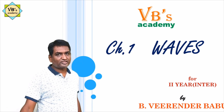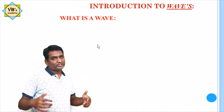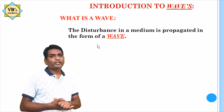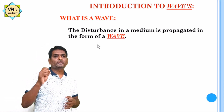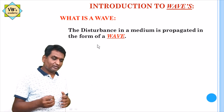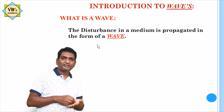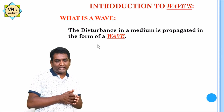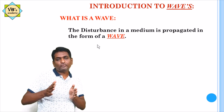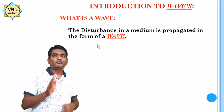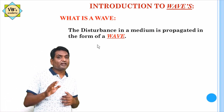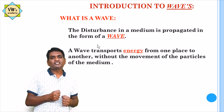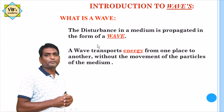Today we are going to start the first chapter, that is Waves. So what is a wave? Any disturbance causing a medium is propagated in the form of a wave. For example, in still water, if you throw a stone, you will observe the ripples. When the stone strikes the water surface, it supplies kinetic energy to the particles of the water. That energy is transferred from one particle to another particle, and in this way energy is transmitted from one place to another.